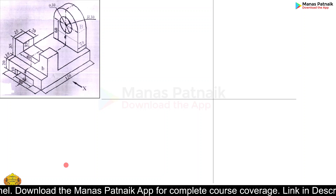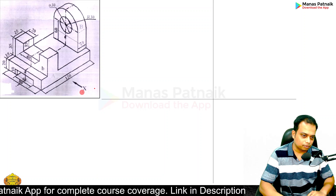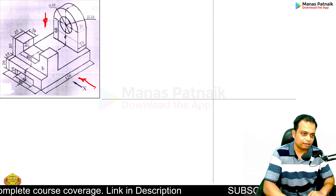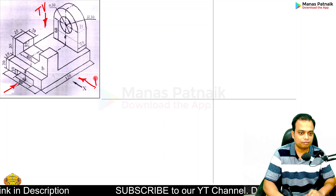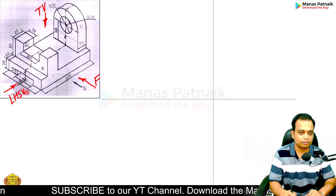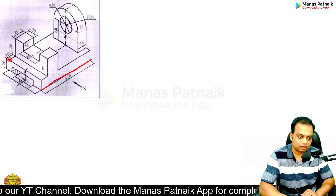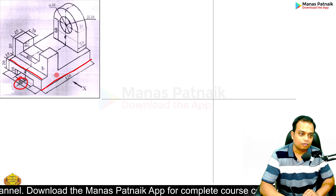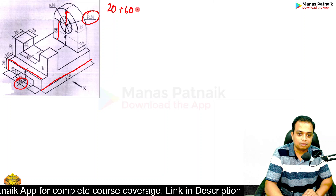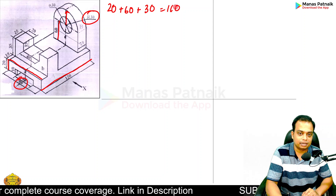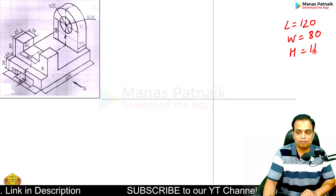The first thing you need to work out is the maximum length, maximum width, and maximum height. The X direction is for the front, the left-hand side view, and the top view. The maximum length is 120, the maximum width is 80, and the height is 20 plus 60 plus 30, which gives a value of 110. So the length is 120, the width is 80, and the height is 110.